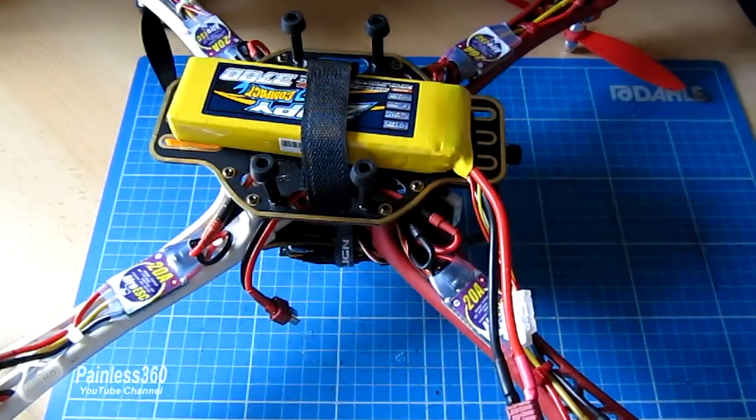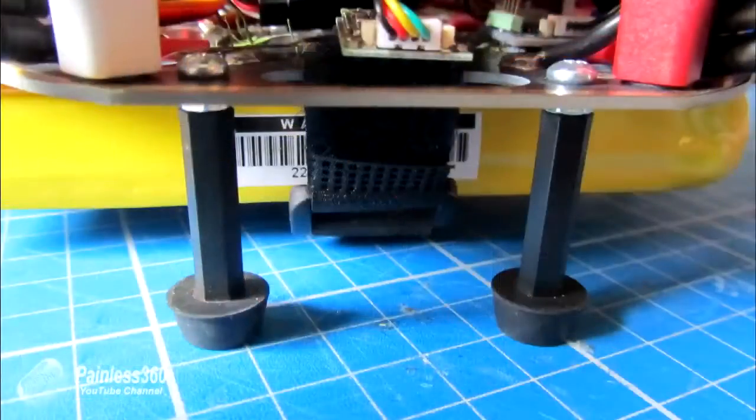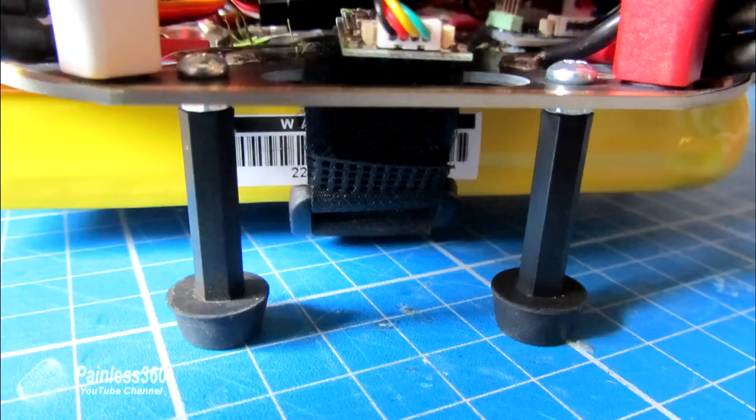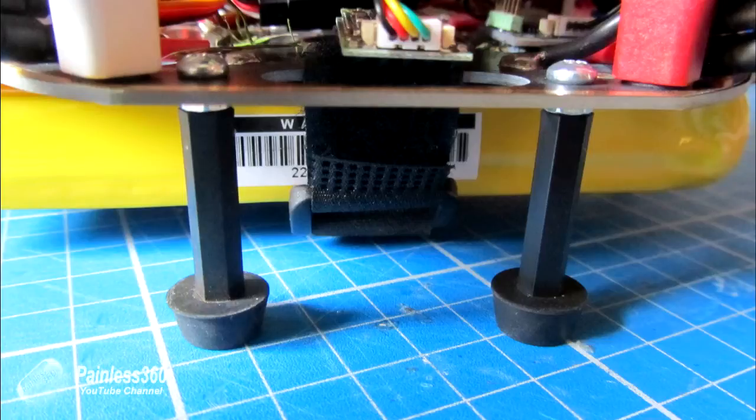Hopefully that's useful for some of you who are looking at this and figuring out how to put legs onto a quad. Nice thing about the 35mm is for pretty much every 3S battery that you're going to come across and even some of the thinner 4S's, it gives just enough clearance between the battery and the ground.